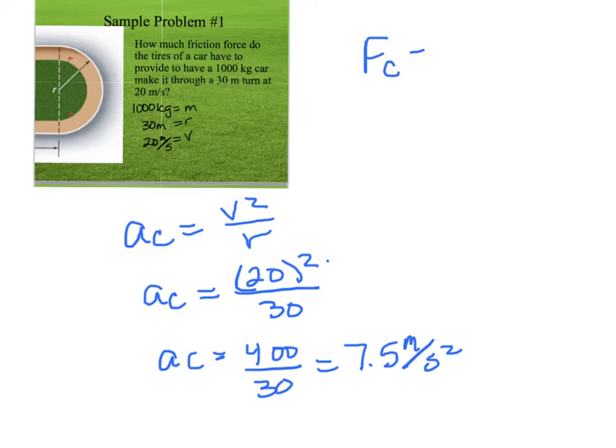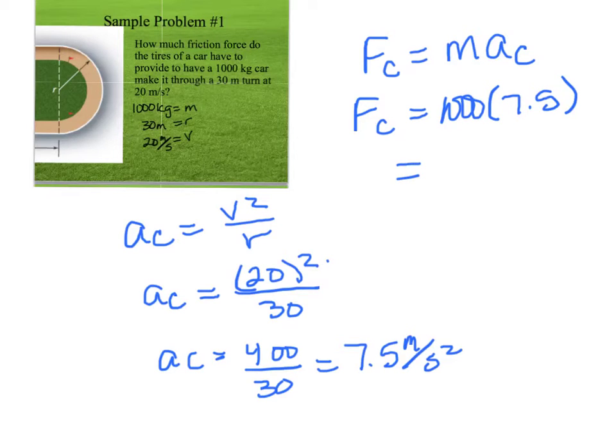So our centripetal acceleration is 7.5 meters per second squared. And since our centripetal acceleration is like our net force, the centripetal force is equal to the mass times the centripetal acceleration. So our centripetal force is going to equal our mass times 7.5, which is 7,500 newtons.